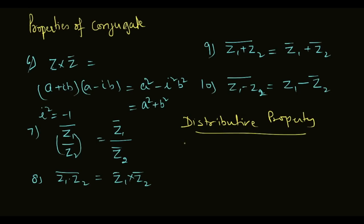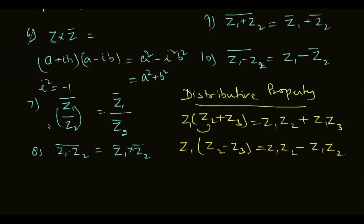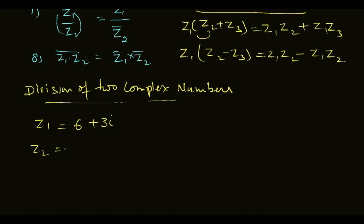The distributive property: z1 times z2 plus z3 equals z1 times z2 plus z1 times z3.